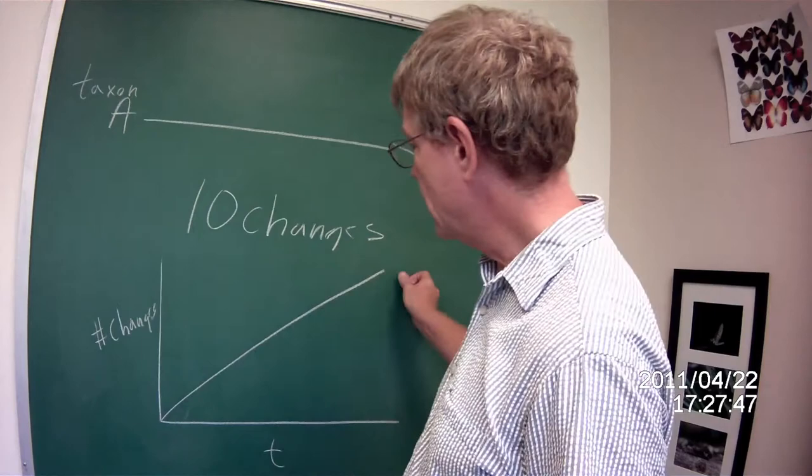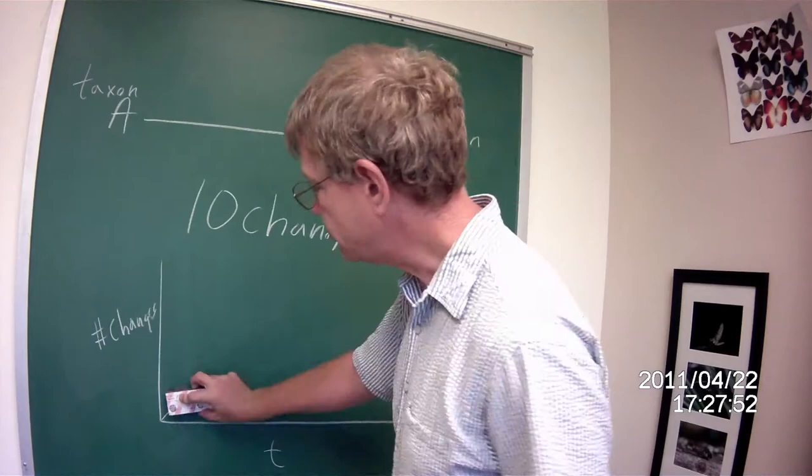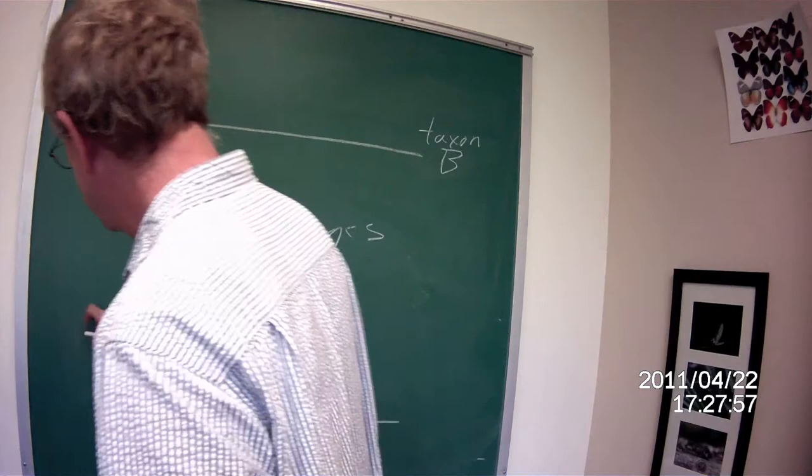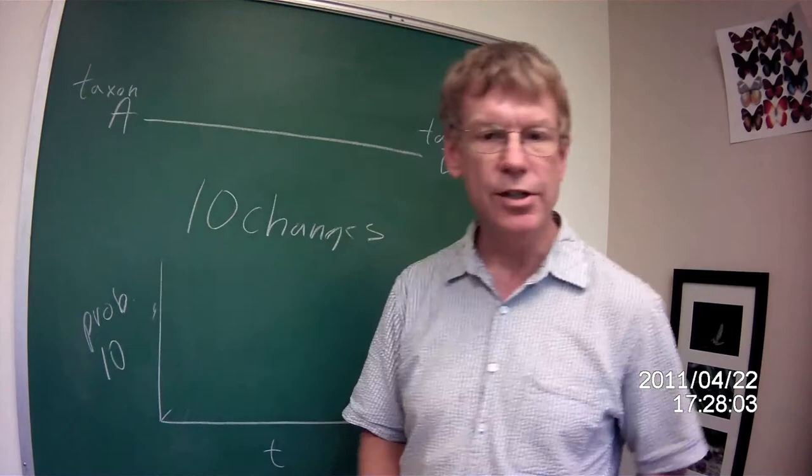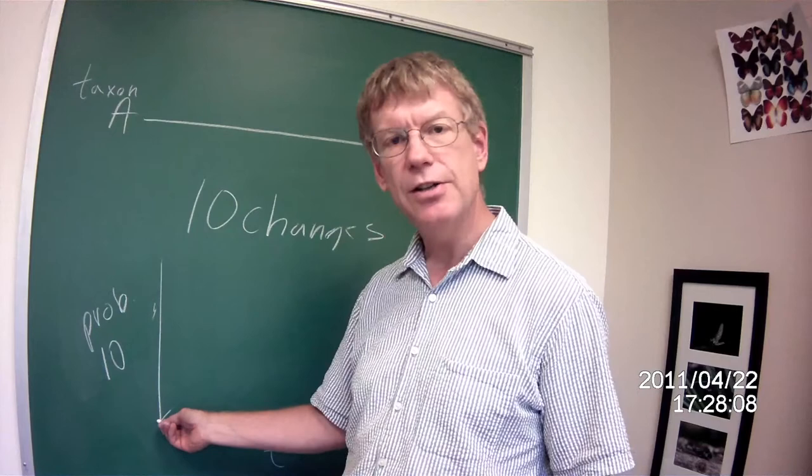Now let's look at this a different way. What if on this axis we had the probability of observing 10 changes? What is the probability of observing 10 changes at time zero? Zero. The probability goes up with time.